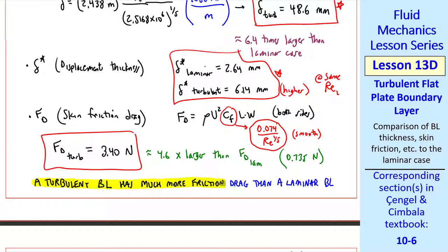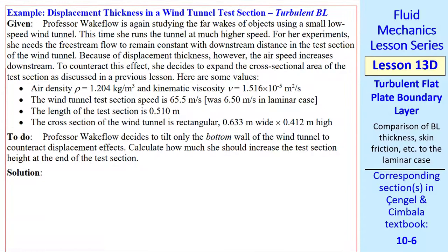We conclude that a turbulent boundary layer has much more friction drag than a laminar boundary layer under the same conditions and at the same Reynolds number. In this particular problem, the turbulent case is the correct one, since our Reynolds number is much larger than the critical Reynolds number.